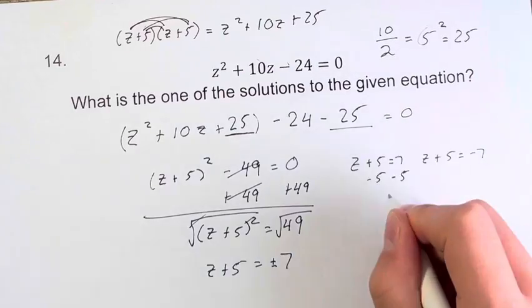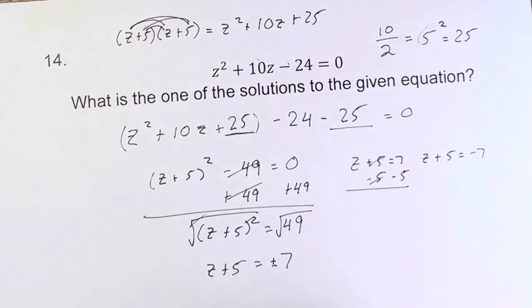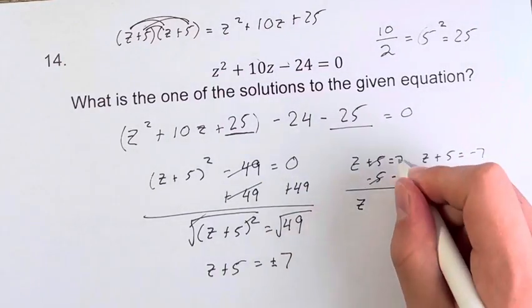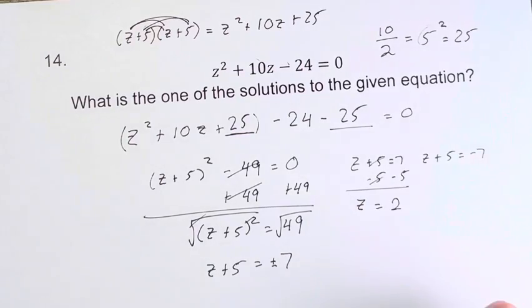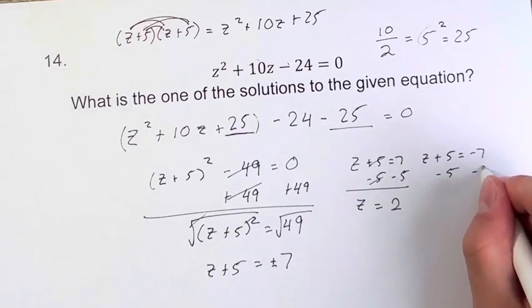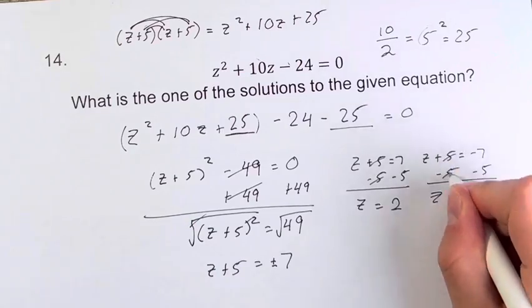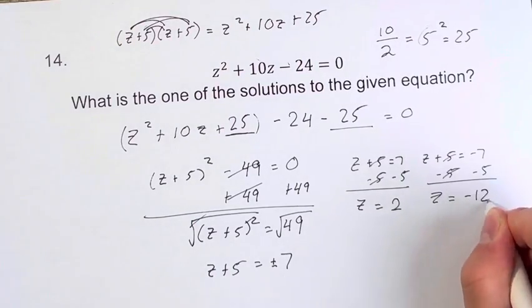In both of these, we want to get z on its own by subtracting 5 from both sides. So we get z is equal to 7 minus 5 is 2. Subtract 5 from both sides here. z, these cancel, is equal to negative 12.